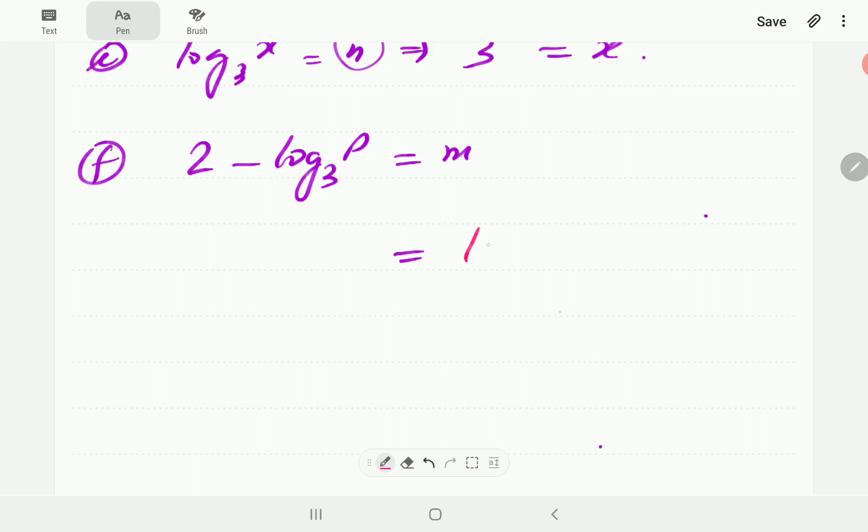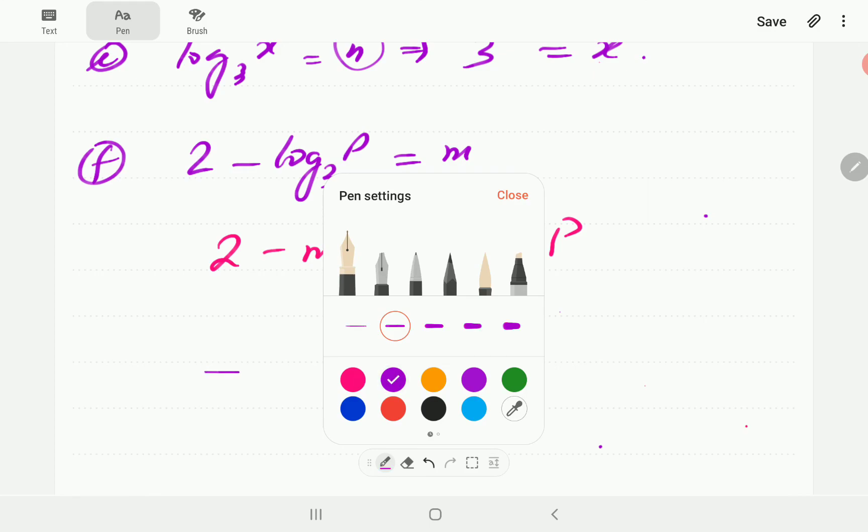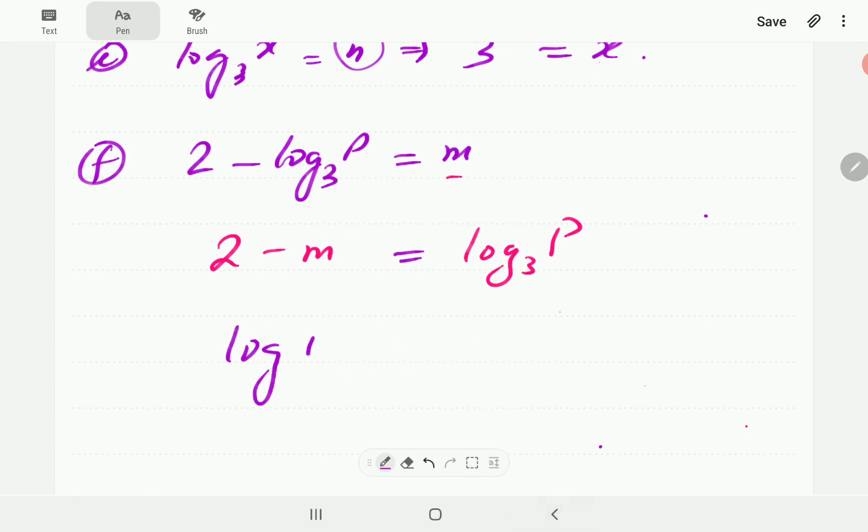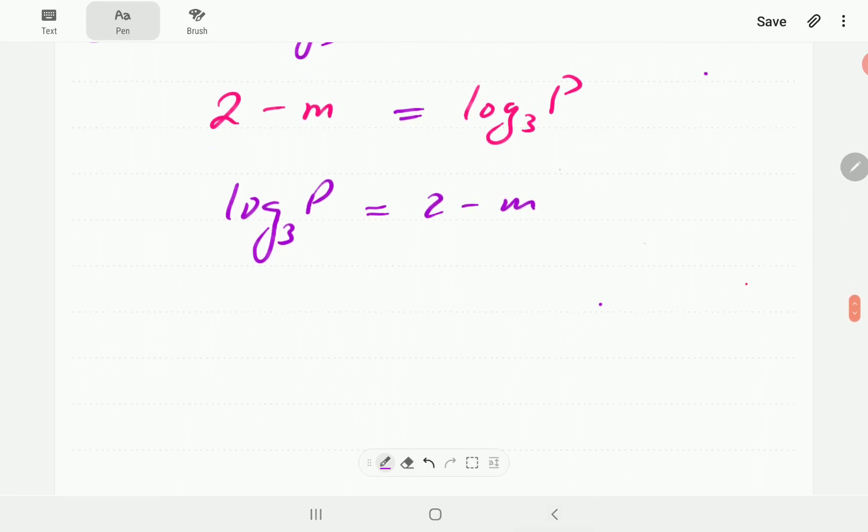This term is minus this side. We take it to the right-hand side. It becomes positive. Then, this m, if we take it to this side, it becomes negative. If I just rearrange, swap sides, we now have base is 3. This is going to be our exponent, 2 minus m. And that is going to be equal to p.